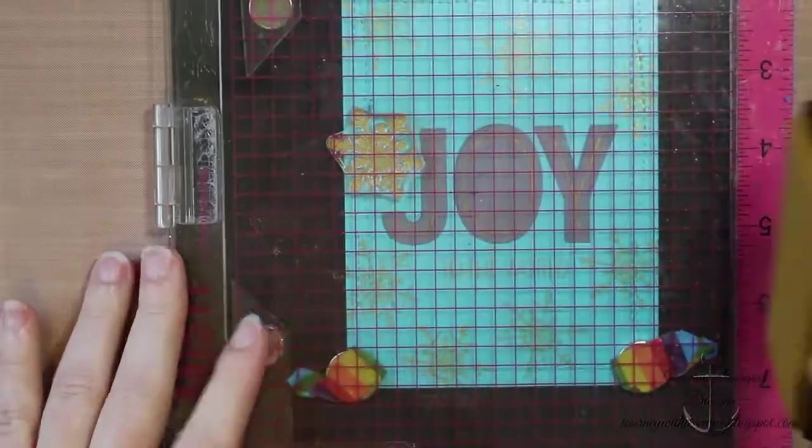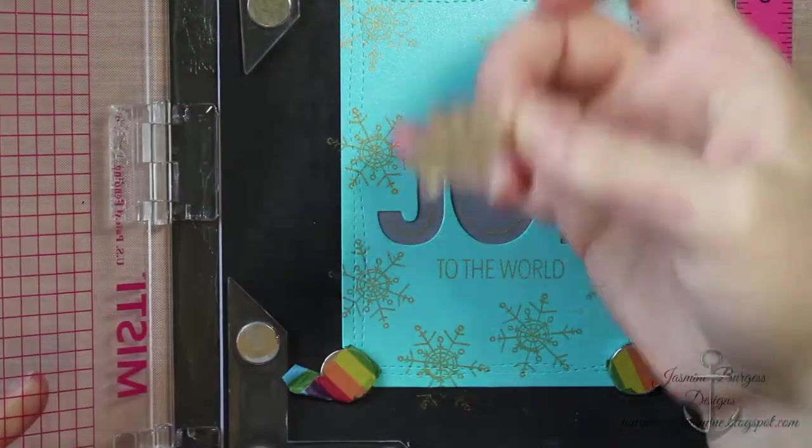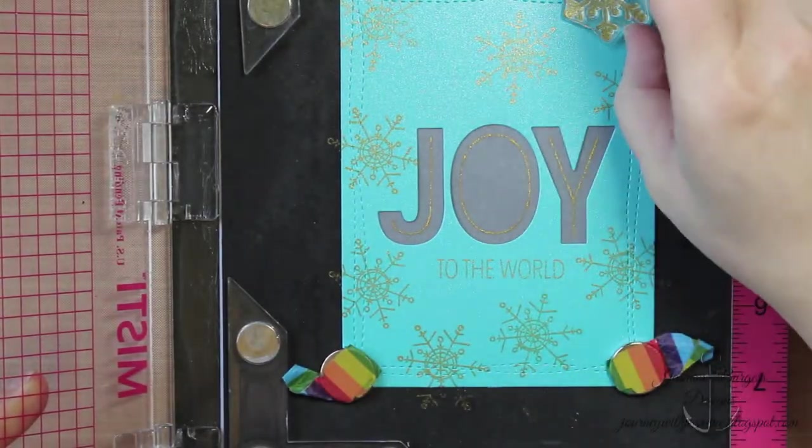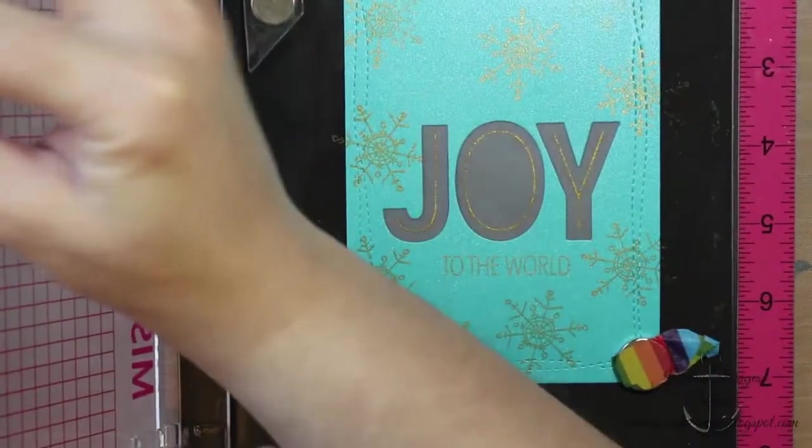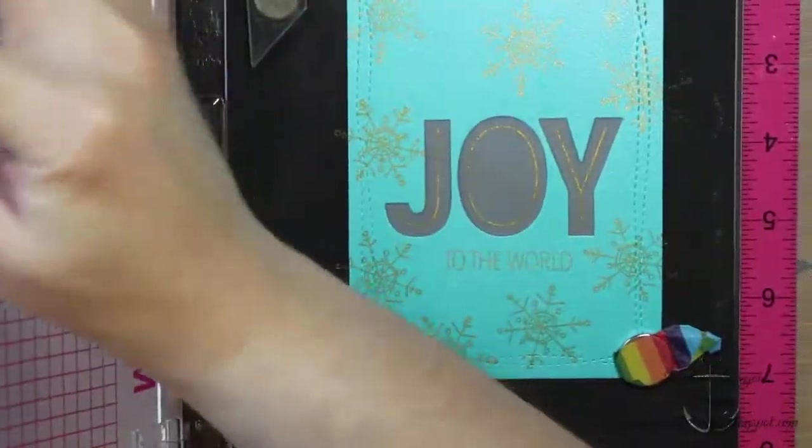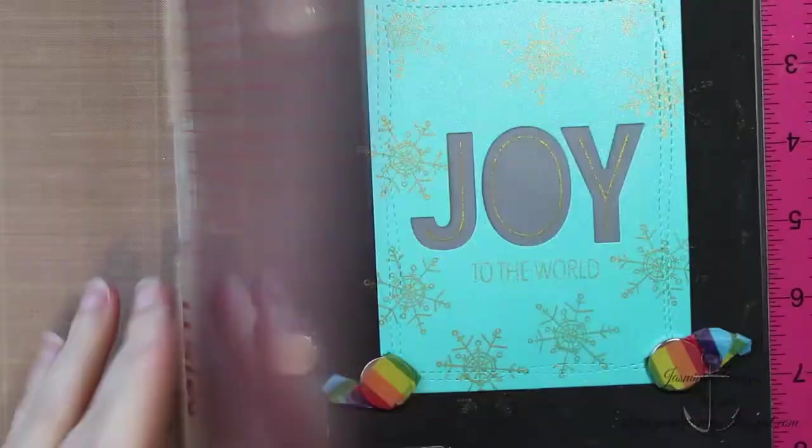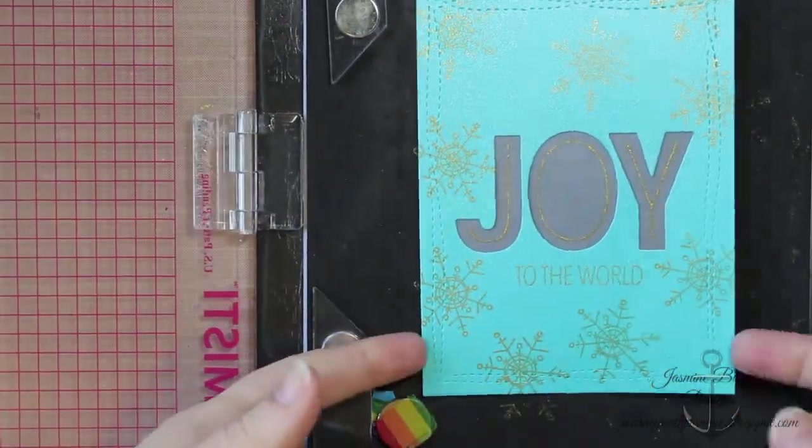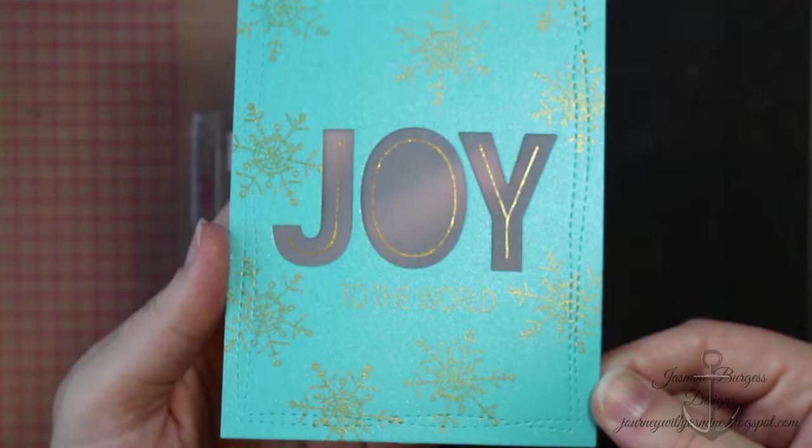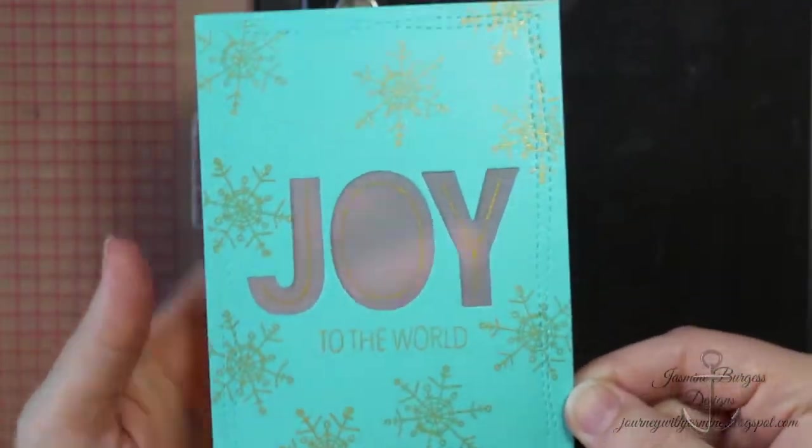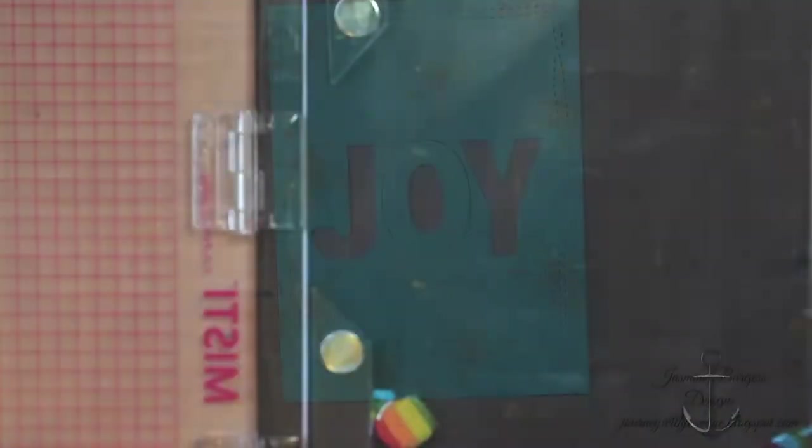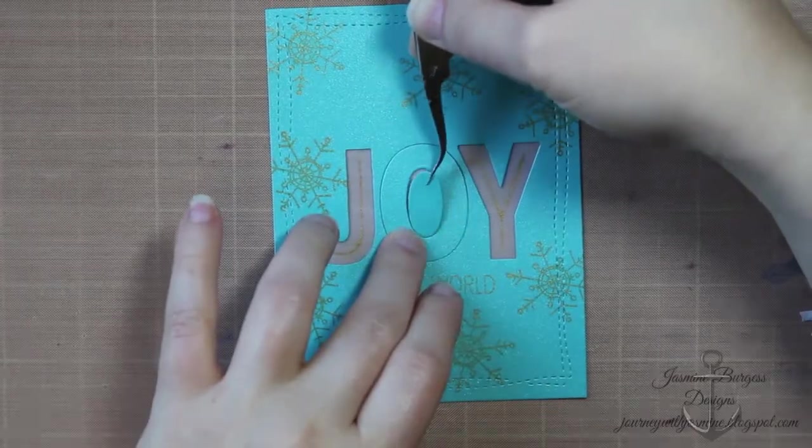And to clean my stamps I use a microfiber cloth and the Ranger Clean Spray or you can use Hero Arts Ultra Clean Spray. I prefer those over baby wipes or one of the trays because it doesn't leave behind lint or little tiny particles that can stick and give you issues.